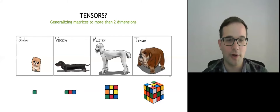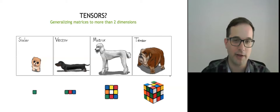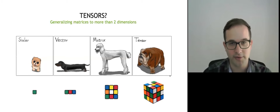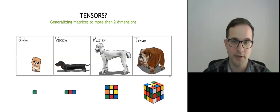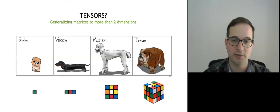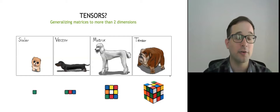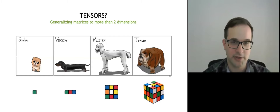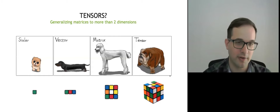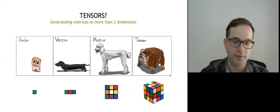So first of all, what are tensors? We are all familiar with scalars, vectors, and matrices. Essentially, tensors generalize the concept of matrices to more than two dimensions. For all purposes of this talk, by tensors I mean multidimensional arrays. The order of a tensor means its number of dimensions, and a mode designates one of those dimensions. So a vector is a first-order tensor, a matrix is a second-order tensor, and so on.